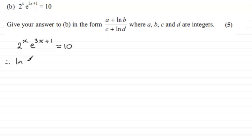So we'll do the natural log of all of 2 to the power x, multiplied by e to the power 3x plus 1, equals, and then we take the natural log of the other side, and that would be the natural log of 10. Now we can split this up. We've got a product here, 2 to the power x times e to the power 3x plus 1.